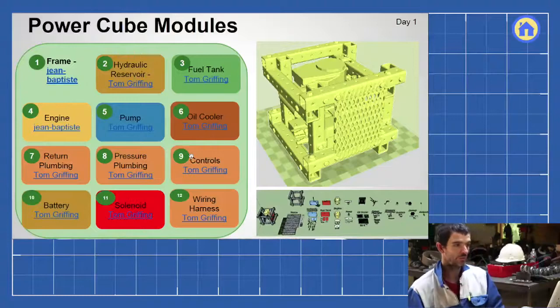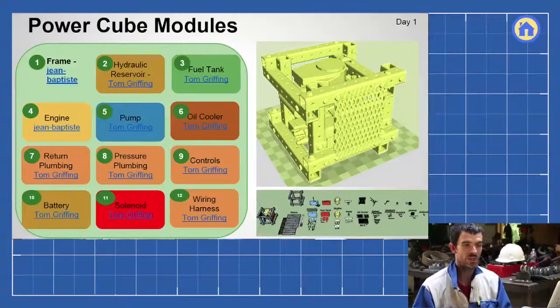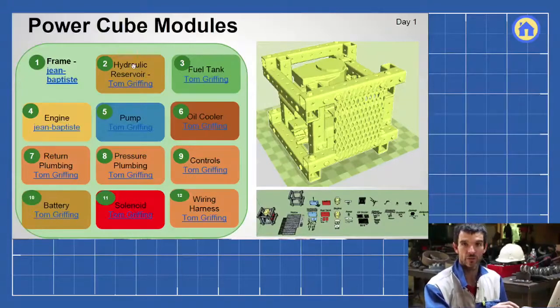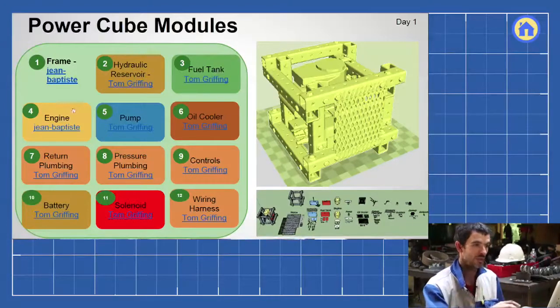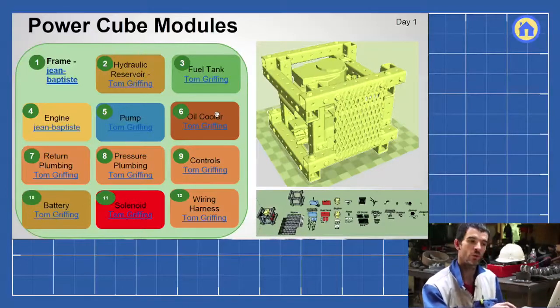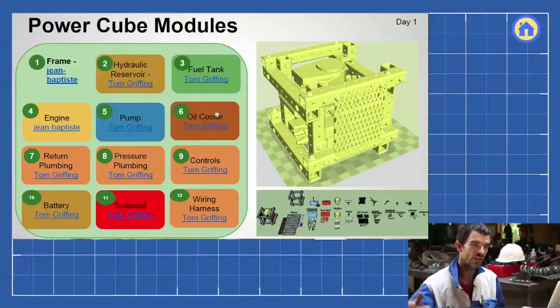Just to go through the main things, there's the frame—the structural box beam tubing frame that we use in all of our machines. There's the hydraulic reservoir, which is the hydraulic fluid that pumps through the system. You need fuel, so there's a fuel tank module.